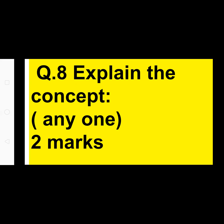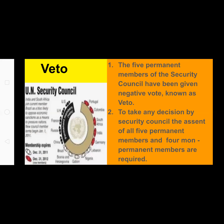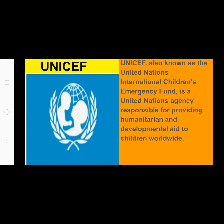Question eight depends on concepts. Two concepts are given and you have to write any one for two marks. First concept: Veto. The five permanent members of the Security Council have been given a negative vote, that is veto. To take any decision by the Security Council, the assent of five permanent members and four non-permanent members is required.